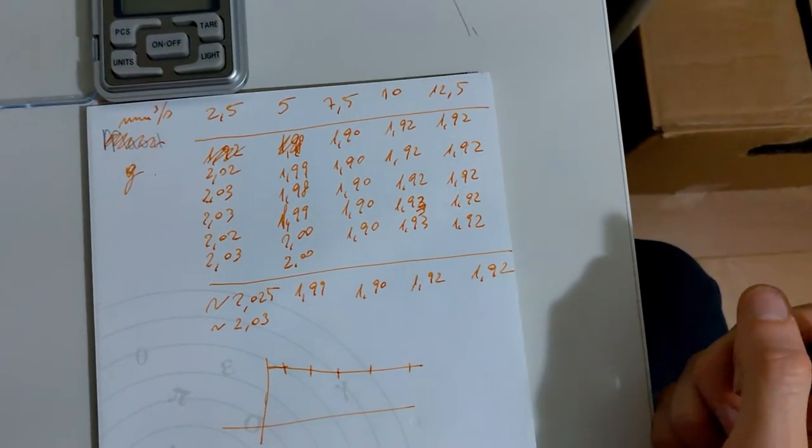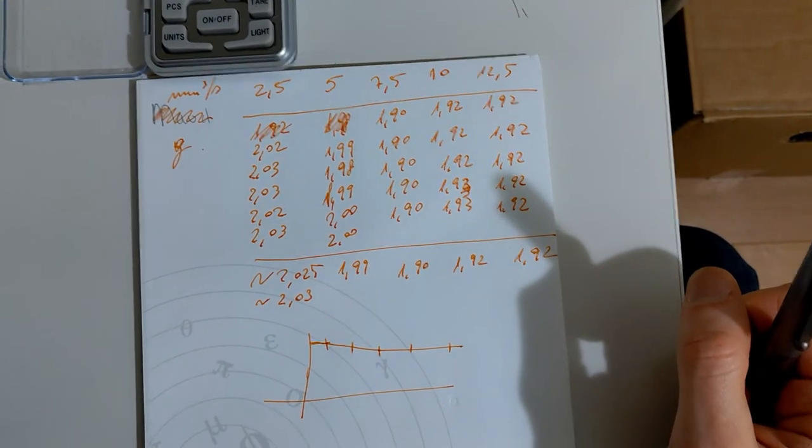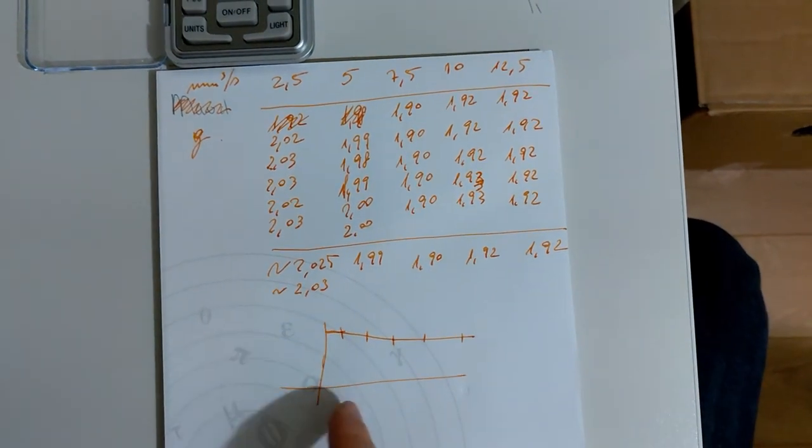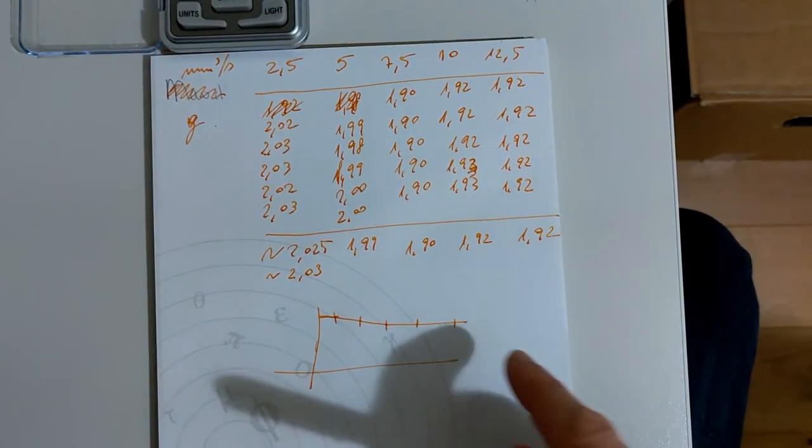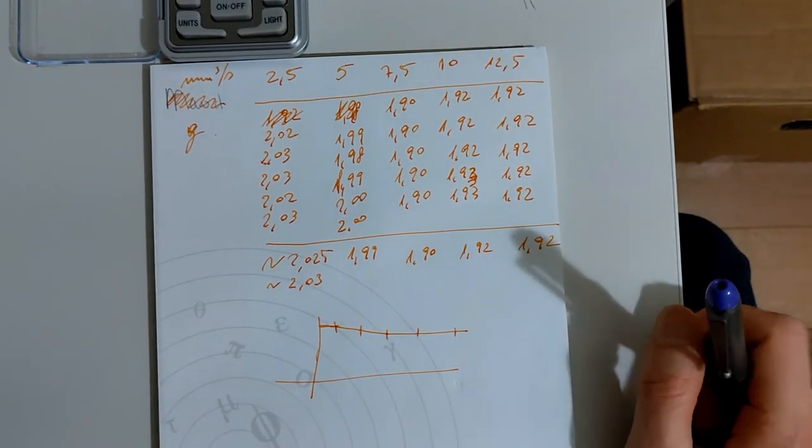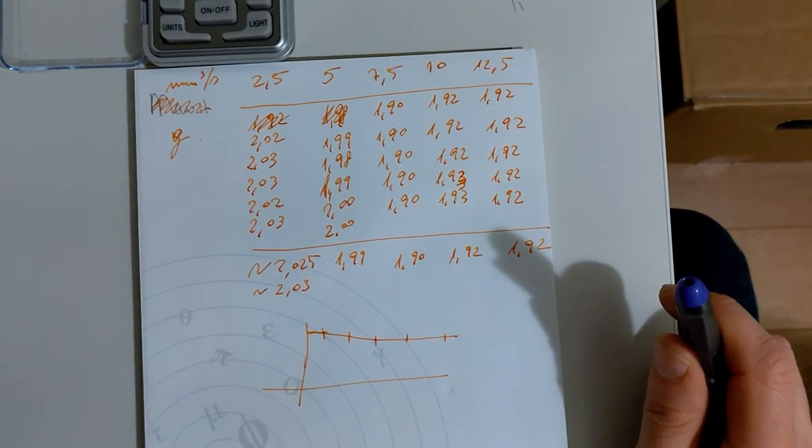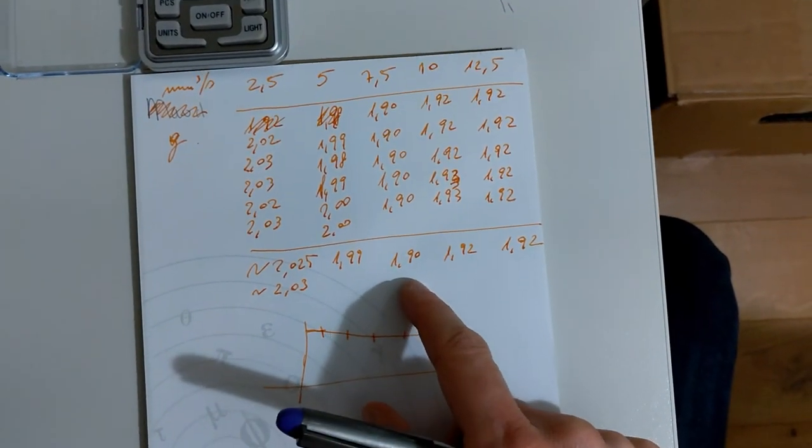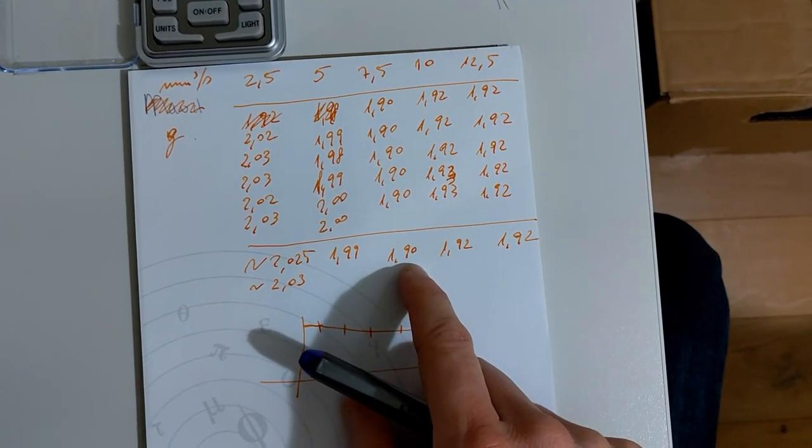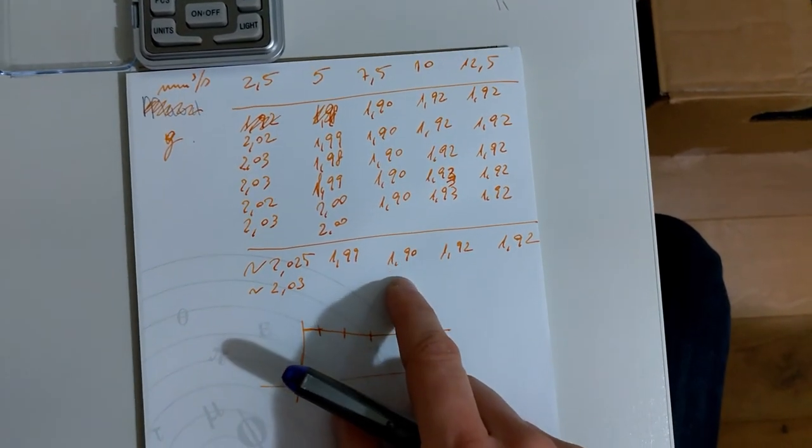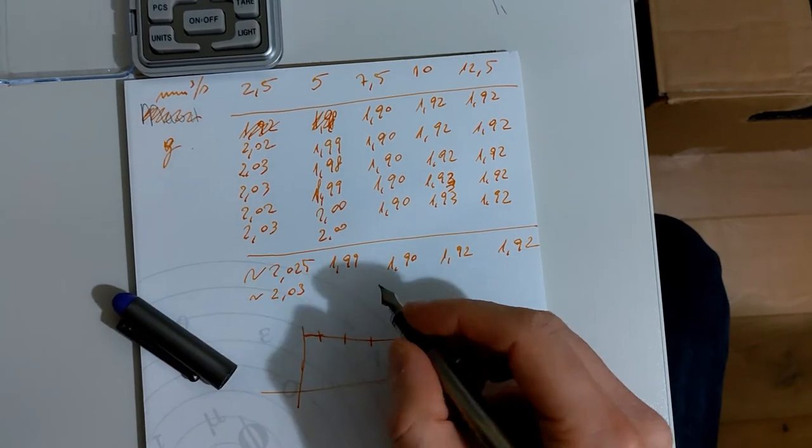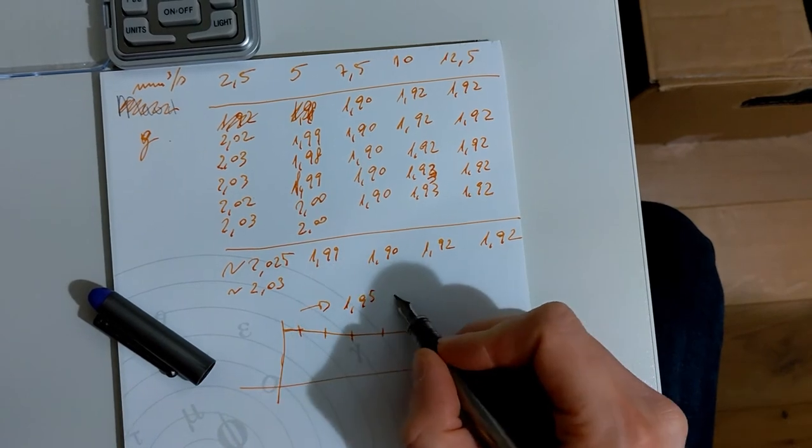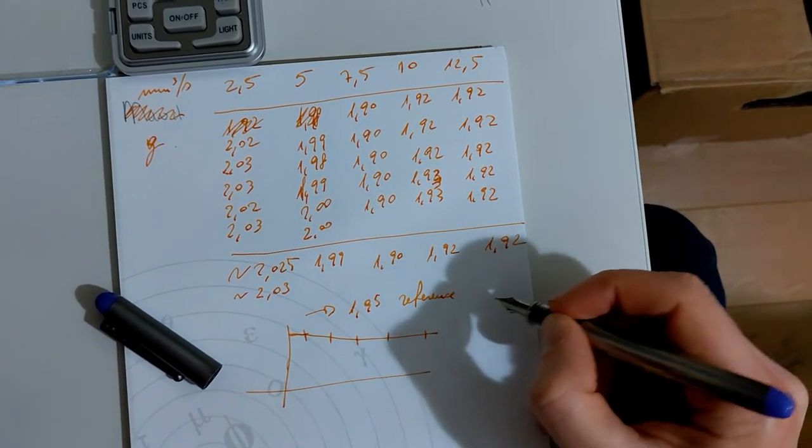In this case it's difficult to tell which is the optimal printing speed to keep the quality because there is an immediate drop in the beginning. I will calibrate the E-steps, extruder steps, at 1.95 knowing that there will be around 2.5% difference at 1.95 reference.